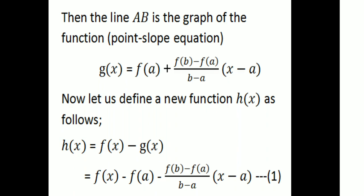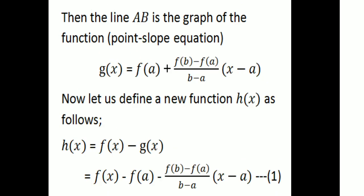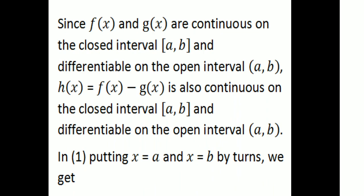Now let us define a new function H(x) = F(x) − G(x), where G(x) is the line defined in equation 1. Since F(x) and G(x) are both continuous on closed interval [a, b] and differentiable, their difference H(x) = F(x) − G(x) is also continuous and differentiable on [a, b].